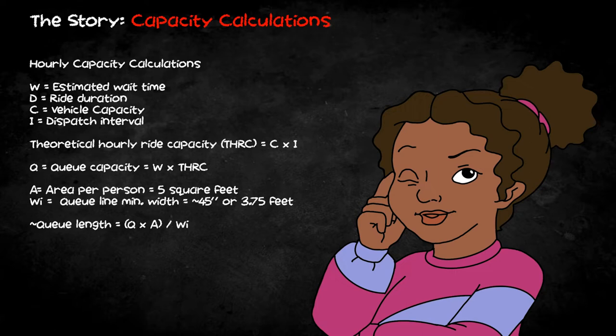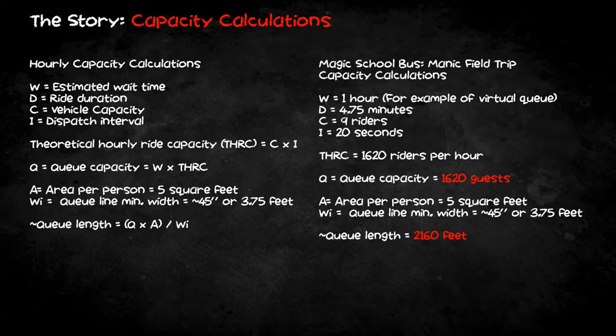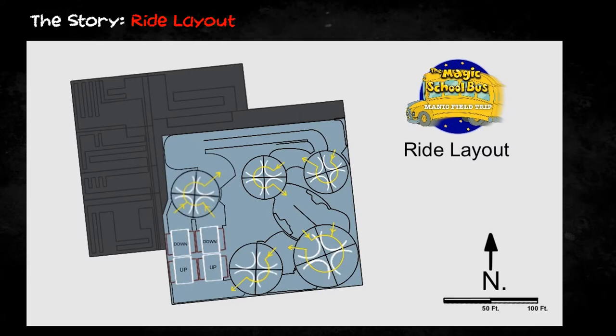You can figure out this number by considering a few main variables, primarily the length of the ride, how many riders the vehicle can hold, and how often the vehicle is dispatched. Without nerding you to sleep, I can breeze over these formulas to find my ride's theoretical hourly ride capacity, as well as how long the queue line needs to be in order to hold that many people. I found an online ride simulator that calculated the hourly capacity of a ride based on vehicle capacity and dispatch interval, scene length, and total ride duration. The variable W is what can fluctuate the most in these equations, because it's merely an estimate of how long a guest will wait for my ride. For instance, if Manic Field Trip only takes on guests through a virtual queue, then riders will sign up for queuing during specific hourly time slots. So the longest the guests would wait for the ride is about 60 minutes. This would yield a THRC of over 1600 riders per hour, which would demand a queue length of over 2100 feet.